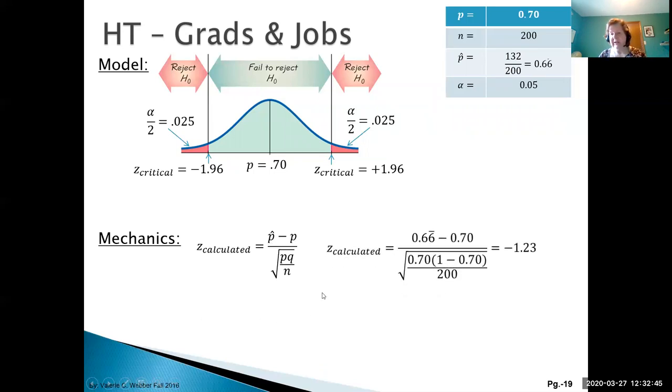Our Z calculated, putting all the values in - remember we're going to use all the decimals, not round it off at all. Point of interest minus center divided by spread, and rounding to two decimal places, we get Z calculated is negative 1.23.